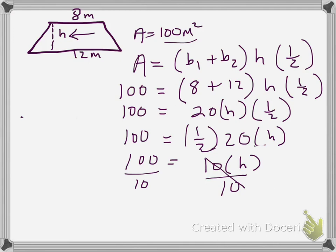On this side, my 10s will cancel, leaving me with just h. On the other side, 100 divided by 10 is 10, and I'm done. So the height is 10. Now remember I was working in meters, so I could add meters in as my unit. And I am all done. There is the height of that trapezoid, 10 meters.